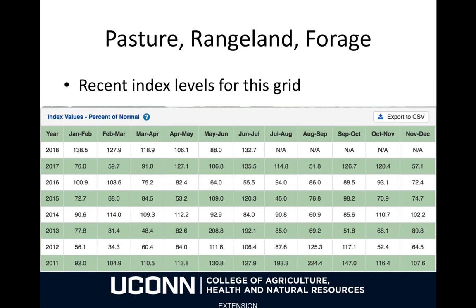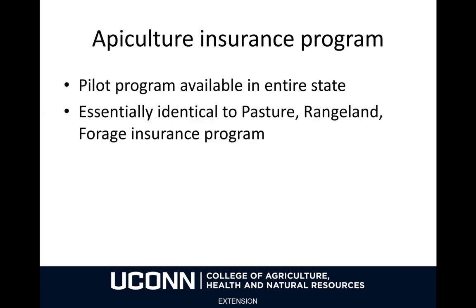For the grid where my office is located, here's an example of how the rainfall index has evolved. So far this year we've had just one two-month period that dropped below the 90% threshold level. Last year we had four different two-month periods that were below 90%, and the year before that, even more. So this may be a good way to have additional insurance for your pasture or hay if you expect there to be low rainfall. The apiculture insurance program for beekeeping is also available throughout the entire state, and it's essentially identical to the pasture, rangeland, and forage insurance program. It doesn't cover production or prices — it just covers the weather.